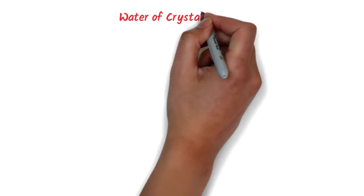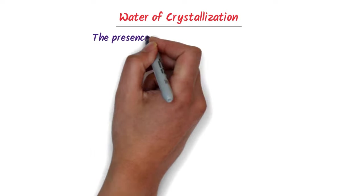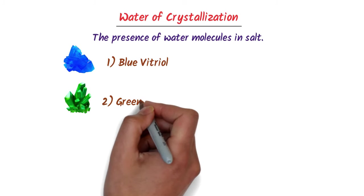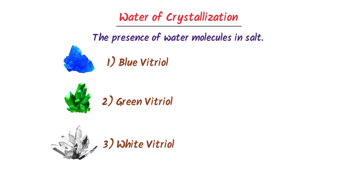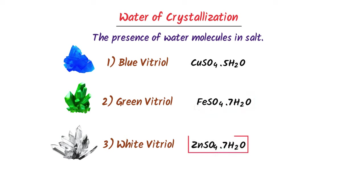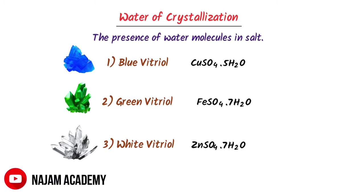Now we will learn about water of crystallization. The presence of water molecules in a salt is called water of crystallization. For example, blue vitriol is copper sulfate, which contains five molecules of water. Green vitriol is iron sulfate, which contains seven molecules of water. White vitriol is zinc sulfate, which also contains seven molecules of water. So water of crystallization refers to salts which contain molecules of water.